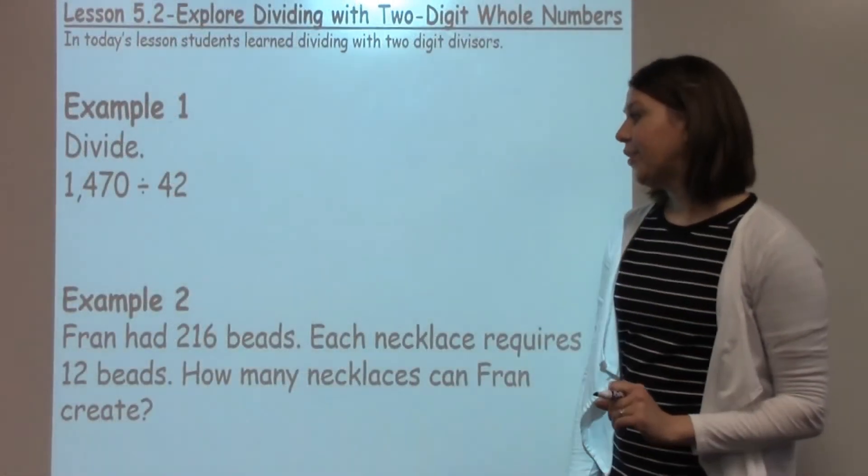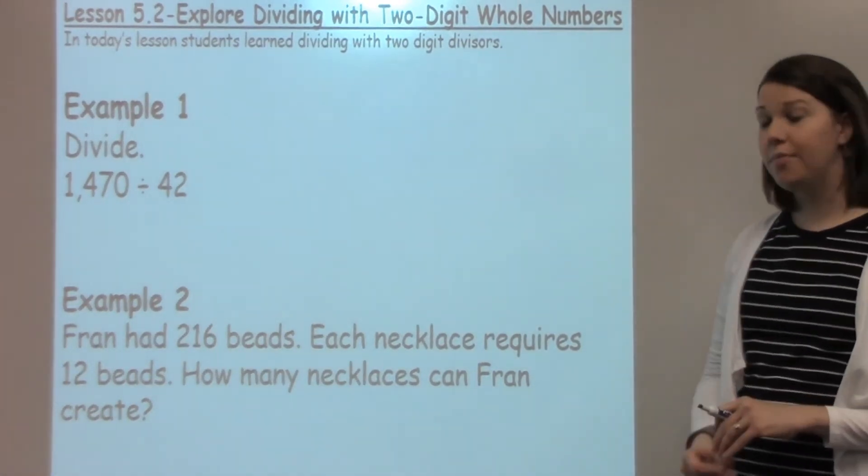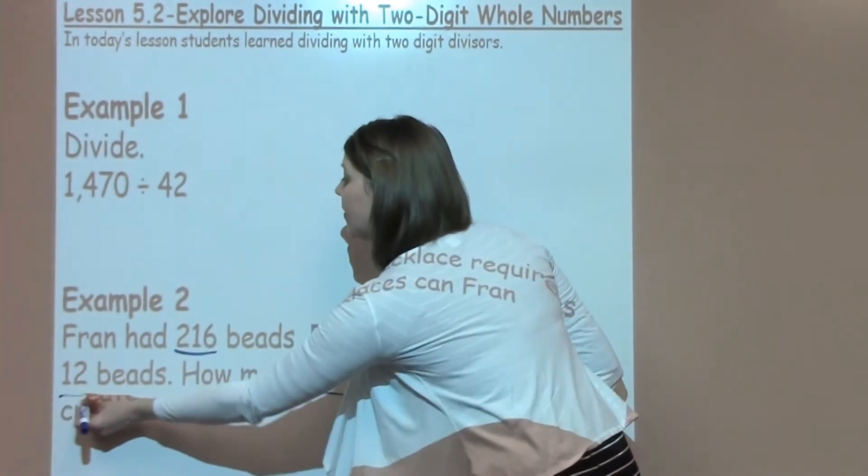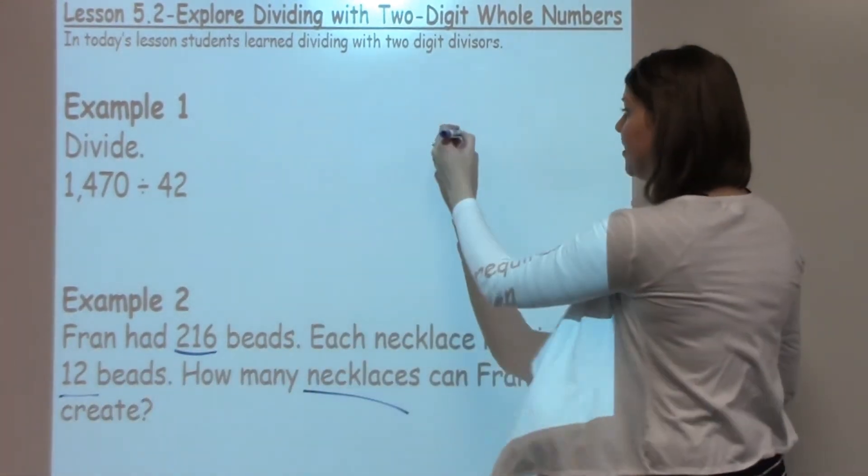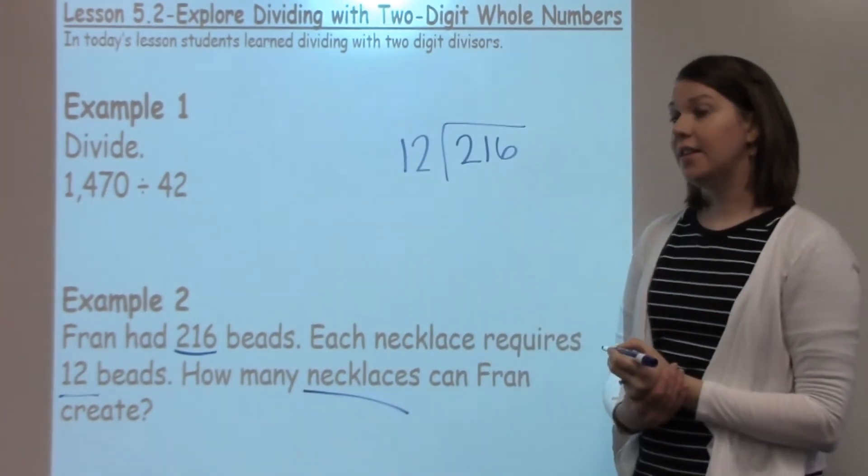Example 2 says: Fran has 216 beads. Each necklace requires 12 beads. How many necklaces can Fran create? Well, I know I had some key information in here. I'm going to have my 216 beads, and I'm going to divide that by my 12 beads that are needed for a necklace.